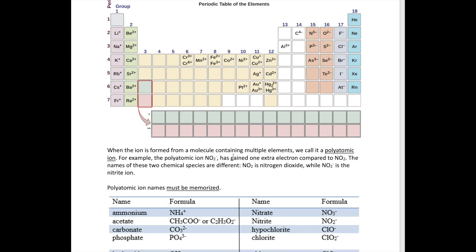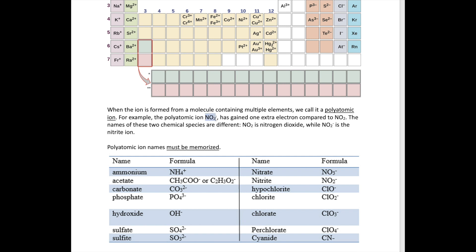But it's also possible that a molecule could also lose or gain electrons. When that happens, we call it a polyatomic ion. Now, why poly? Poly means many. So it's because in the ion, there is more than one atom. For example, NO2 minus. So NO2, there's three different atoms here, right? One nitrogen, two oxygen. This is the NO2 molecule that has gained one extra electron.